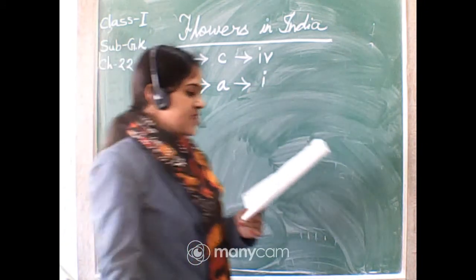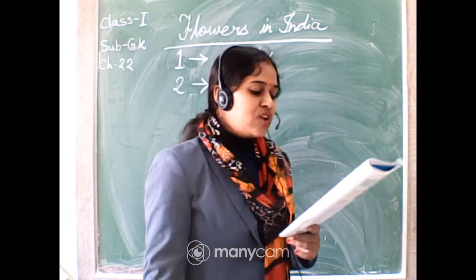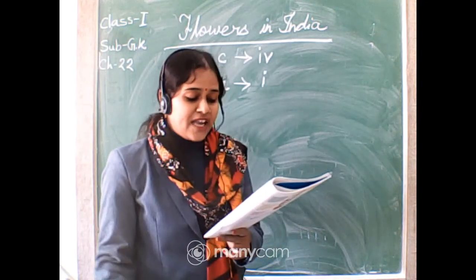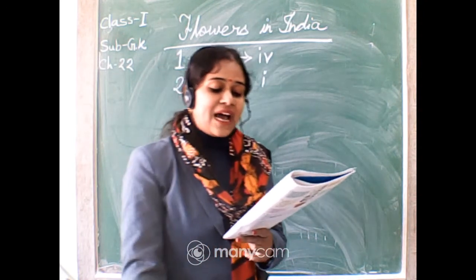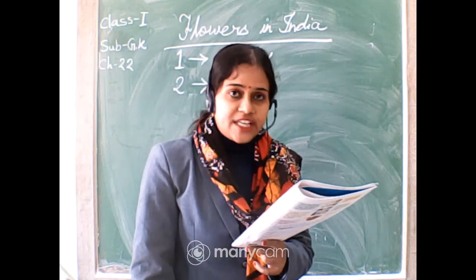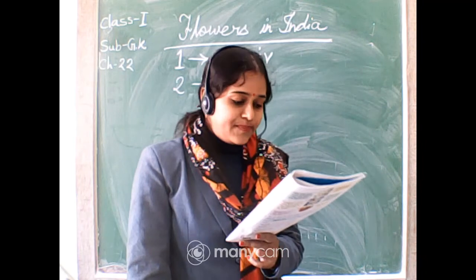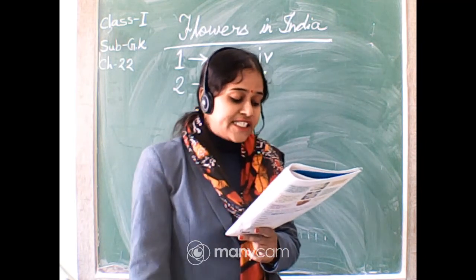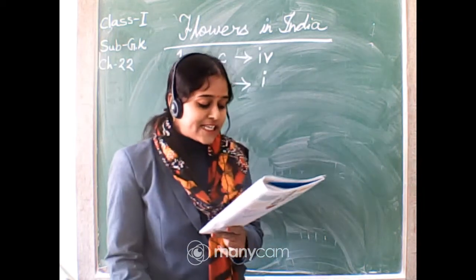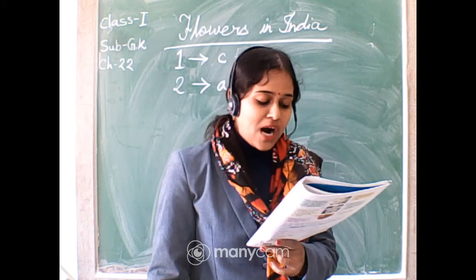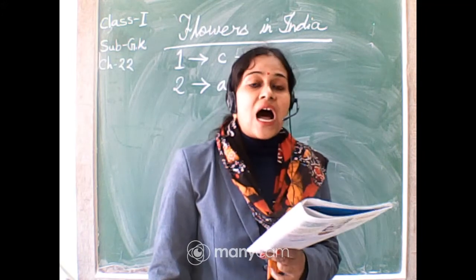Strings of marigold make lovely garlands or decorations. So number two joins picture A. Next, number three: Jasmine is a small white flower with a lovely scent.